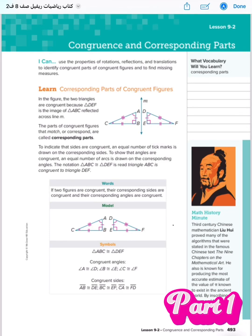Lesson 9.2: Congruence and Corresponding Parts. In this lesson, you can use properties of rotations, reflections, and translations to identify congruent parts of congruent figures and to find missing measures.